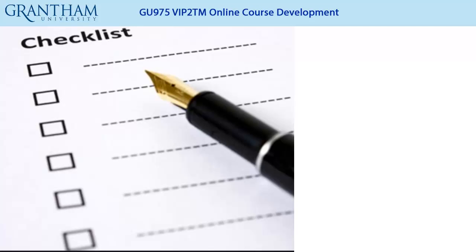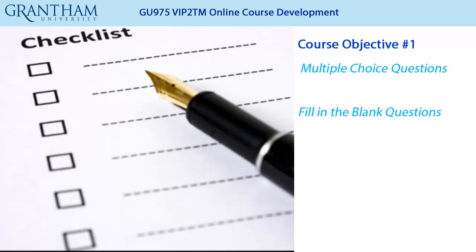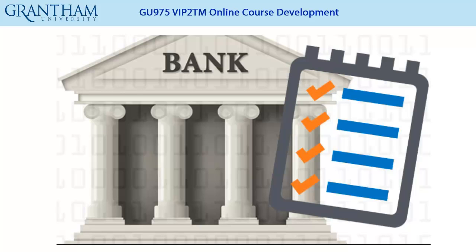Let's go back to your list of course objectives. Under each objective, I suggest adding space for each of the four types of questions: multiple choice, fill in the blank, short answer, and essay. Now we can select test questions. I suspect that you will be consulting the publisher's test bank for your questions. You can also revisit the learning objectives, usually found at the beginning of each chapter, to transform those statements into exam questions, especially short answer and essay questions.